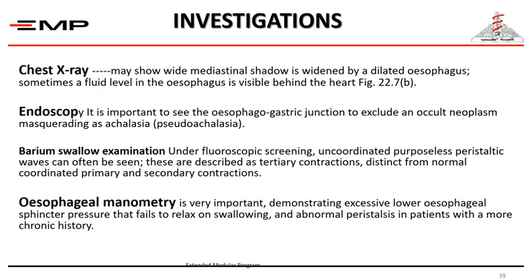To investigate achalasia, we perform upper GI endoscopy to rule out any occult tumor — so-called pseudo-achalasia — because such cases are very similar to achalasia in symptoms, and biopsy should be taken. Barium swallow under fluoroscopy will show the typical parrot beak appearance. Manometry is very important because it measures the pressure in the lower sphincter, which is usually above 40 mmHg, with failure of relaxation on swallowing and abnormal peristalsis in more chronic conditions.